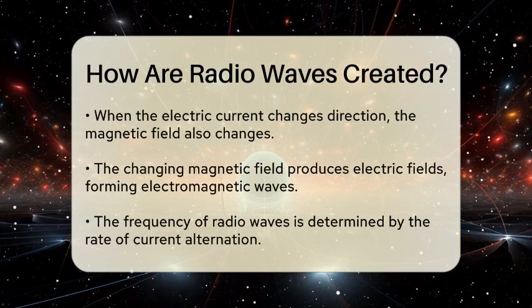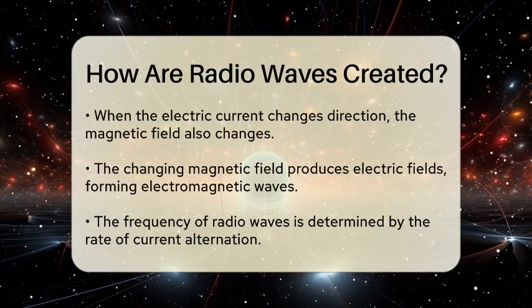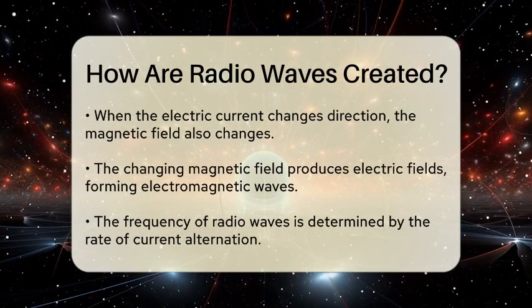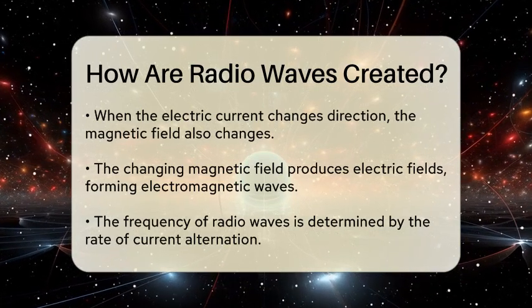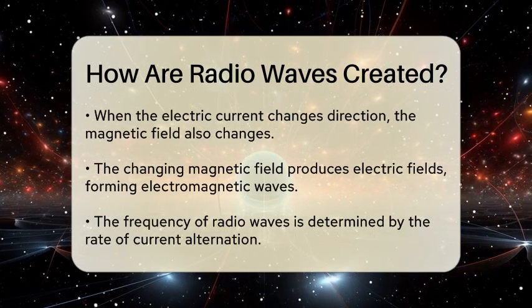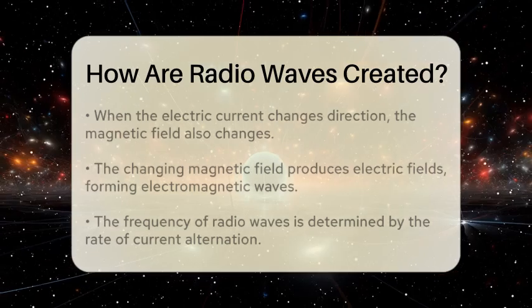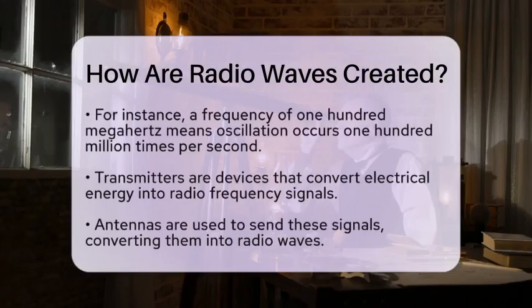For example, a radio station broadcasting at a frequency of 100 MHz produces waves that oscillate 100 million times per second.